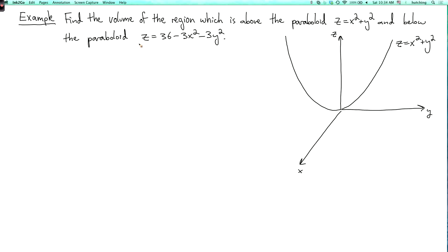And the second paraboloid is an upside-down paraboloid because the coefficients of x squared and y squared are negative, and the apex is where z equals 36. So it goes down from here, like that. So this is z equals 36 minus 3x squared minus 3y squared.